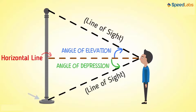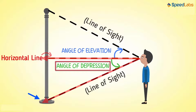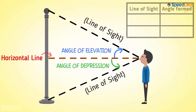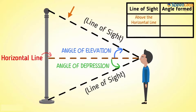When a person is looking down, the angle formed by the line of sight with the horizontal is the angle of depression. Here the line of sight is below the horizontal. So we can say that when the line of sight is above the horizontal, angle of elevation is formed, and when the line of sight is below the horizontal, angle of depression is formed.